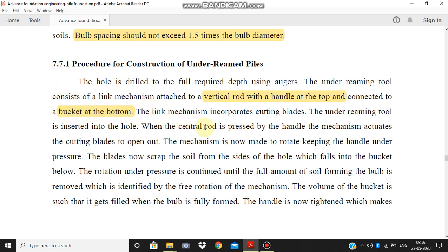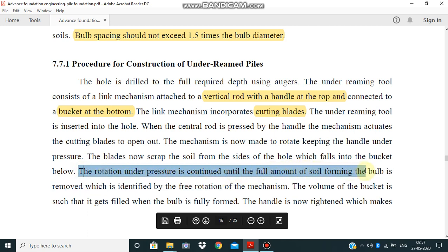There are cutting blades in the link mechanism that incorporate cutting blades. The under-reaming tool is inserted into the hole. When the central rod is pressed by the handle, the mechanism actuates the cutting blades to open outward. The cutting blades scrap the soil. The rotation applies pressure, and the blades now scrap the soil from the sides of the hole, which falls into the bucket below.